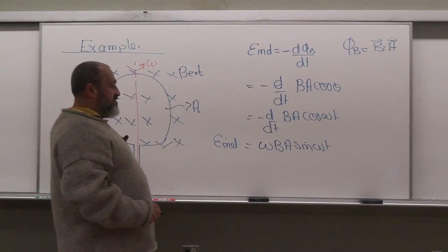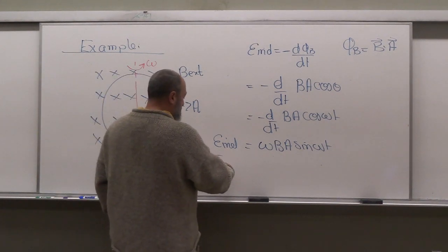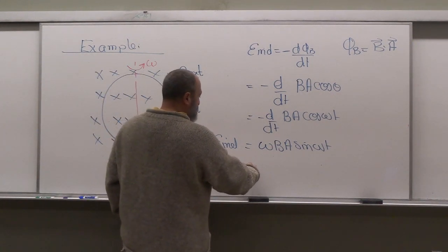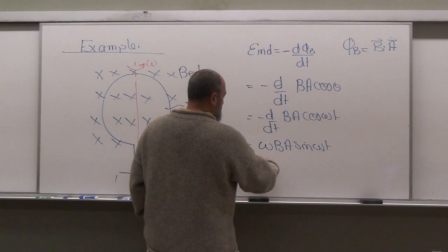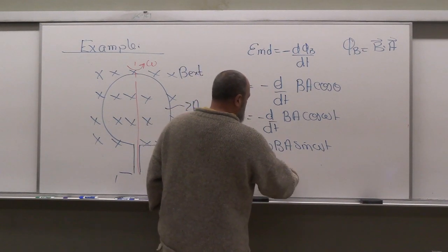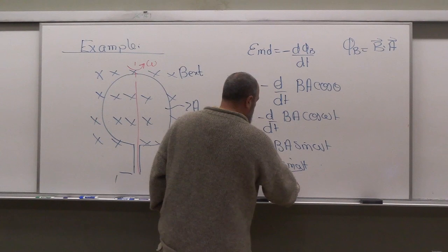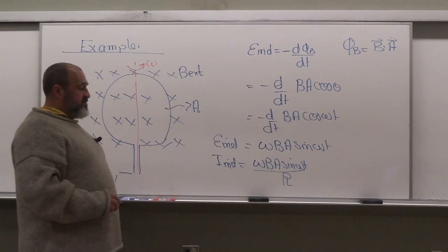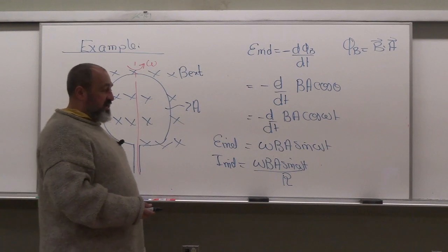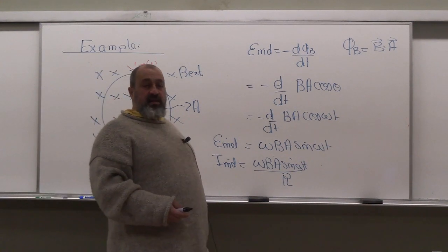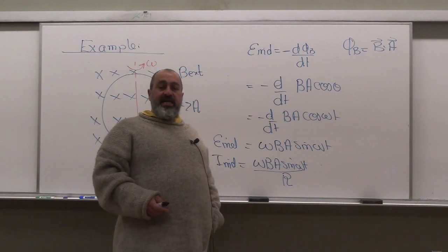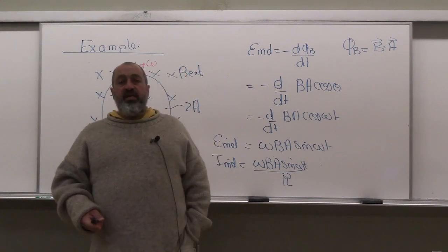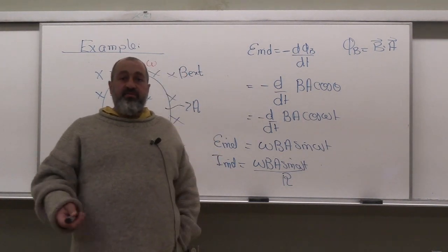And if this loop has resistance R, I induced will look like omega B A sine omega t divided by R. And you have now created an AC current, right? You have dynamic current, you have alternating current, and this is exactly how you power things.